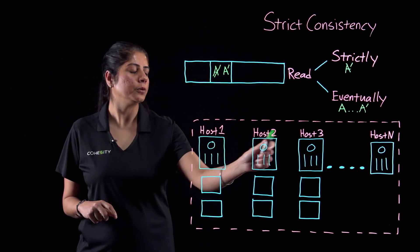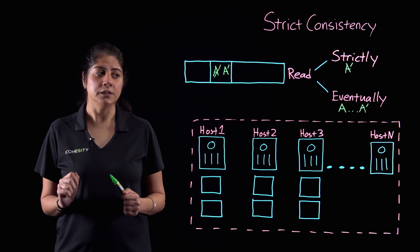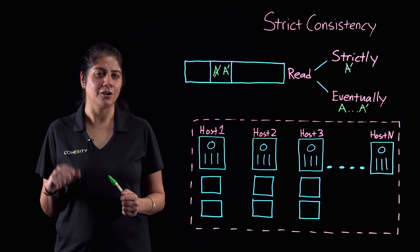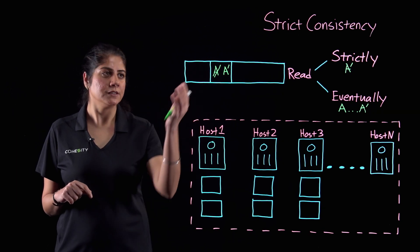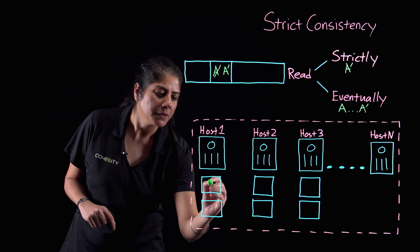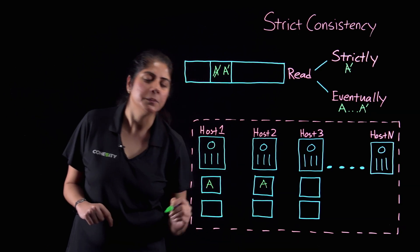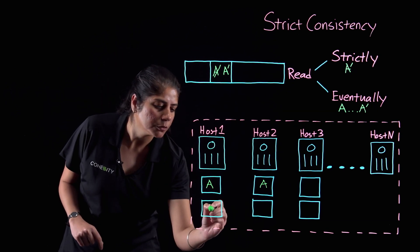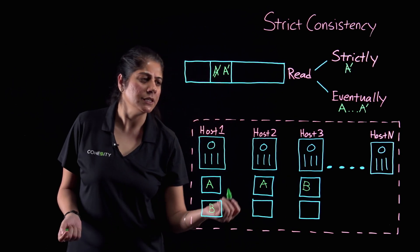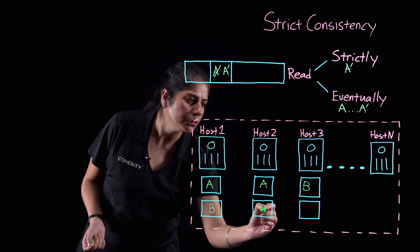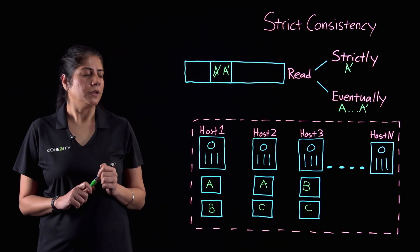These scale-out systems consist of multiple hosts and are typically built out of commodity hardware. With commodity hardware, failure is considered a norm, so multiple copies of each data segment are maintained. For example, data segment A may have a copy on Host 1 and Host 2, data segment B may have a copy on Host 1 and Host 3, and data segment C may have a copy on Host 2 and Host 3.